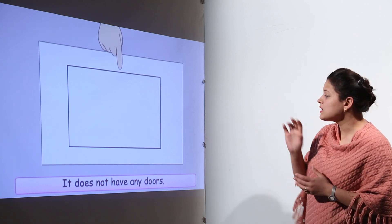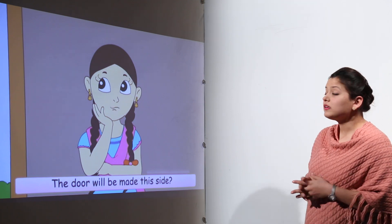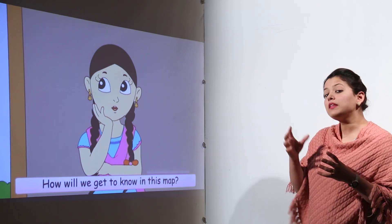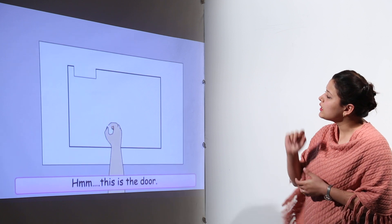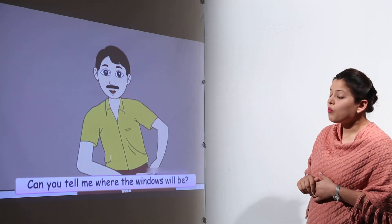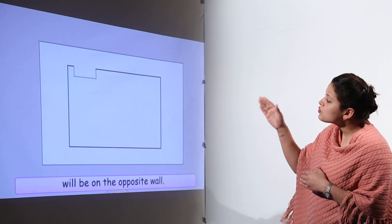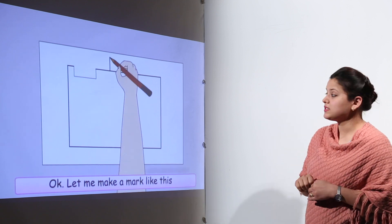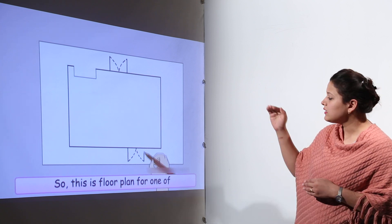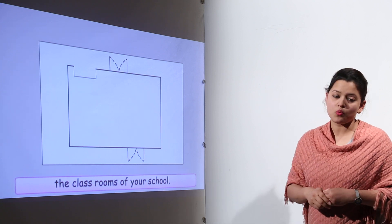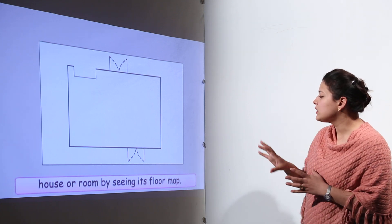If you look at this room on the map, it is a closed room — it does not have any doors or windows. So we have to mark the doors and windows of the classroom on the sheet. A door is made like this. One window is just adjacent to the door, and the other window is on the opposite wall of the door. This is how we make the floor map of the classroom.